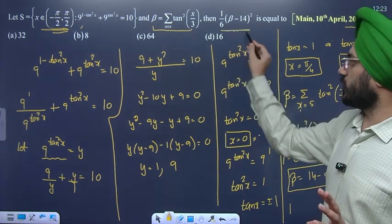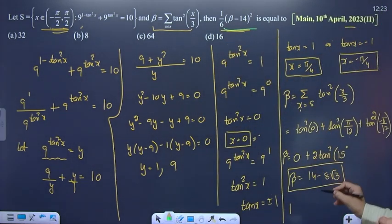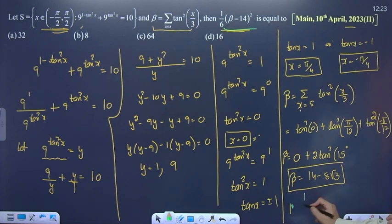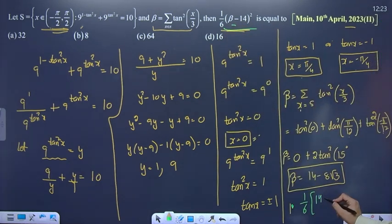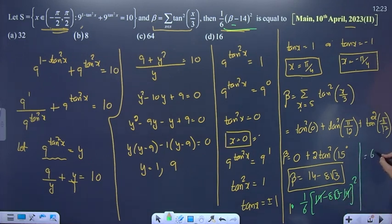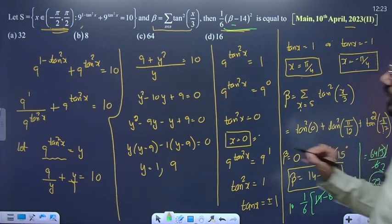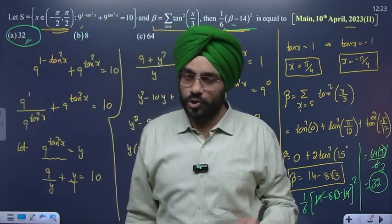Put karo to final answer aayega. 1/6·(beta - 14)², beta value 14 - 8√3 yahan put karo. 14 cancel ho jaata hai, 8√3 bachta hai. 8² = 64, into 3 = 192, divided by 6 = 32. Final answer is 32, means Option A. Thank you students.